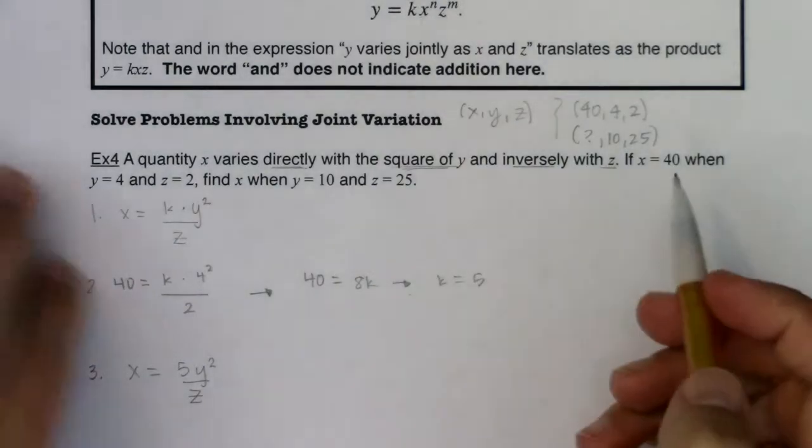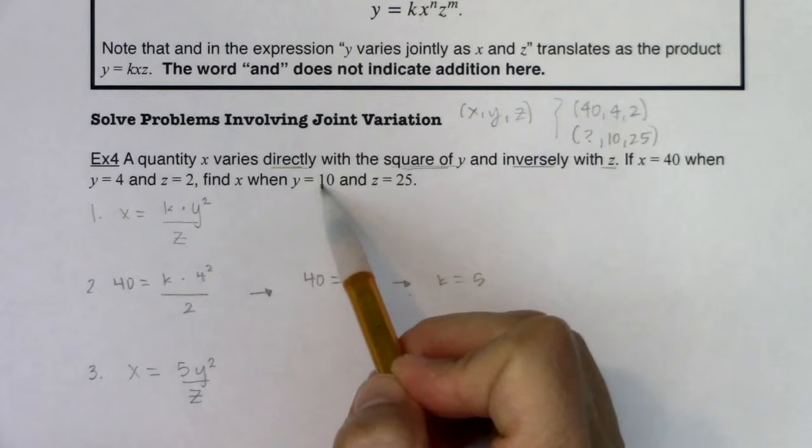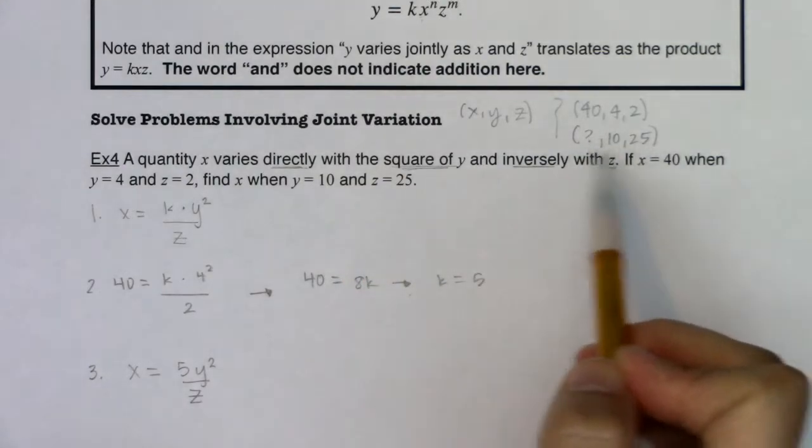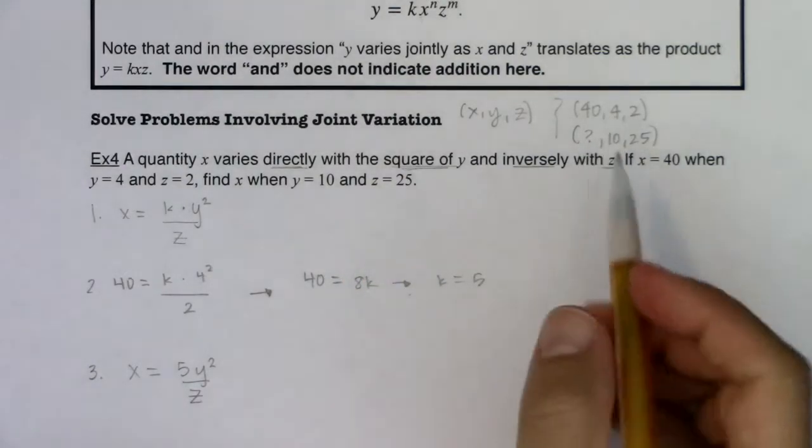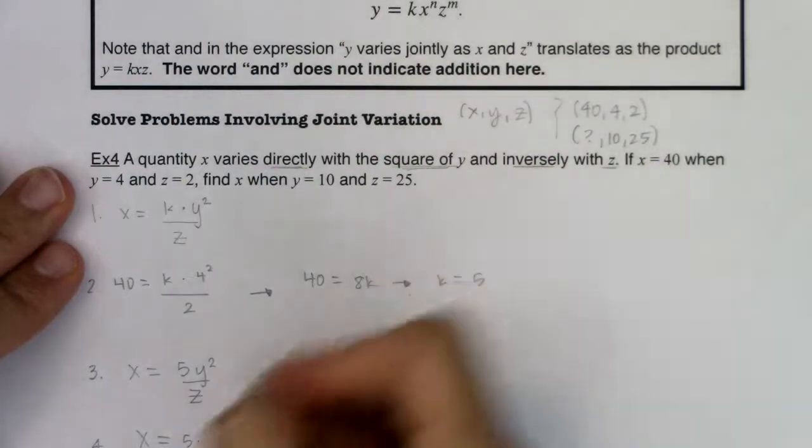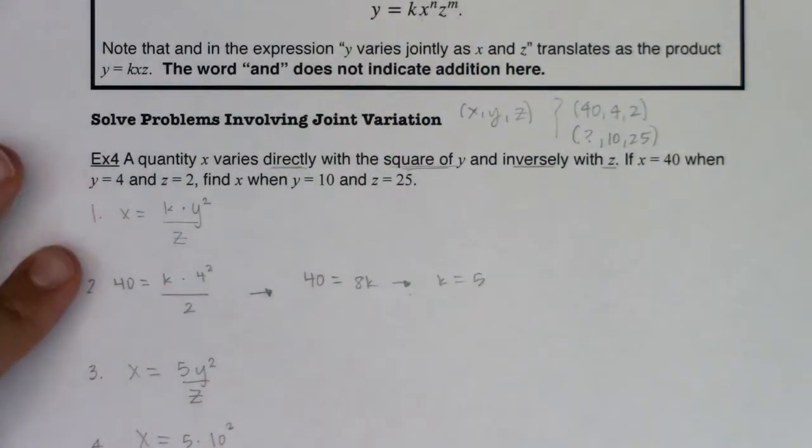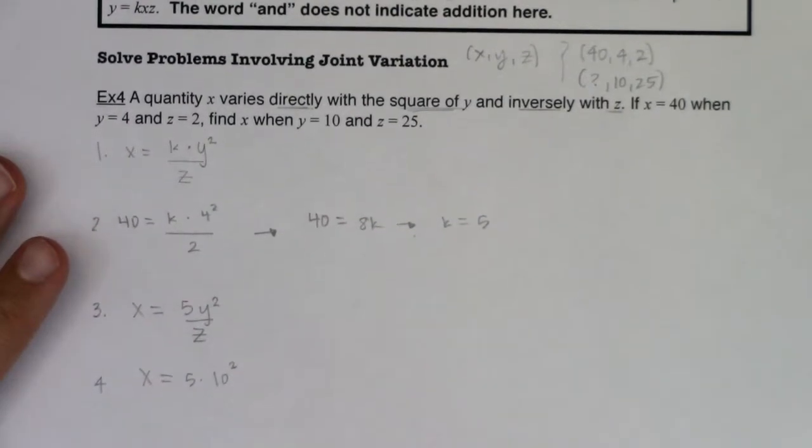The last thing I want to do is answer the question asked to me. What was X when Y was 10 and Z was 25? Again, I had an incomplete ordered triple. So for step 4 here, I want to find out X, that would be 5 times Y squared, which would be 10 squared. Not going to forget to square that 10.